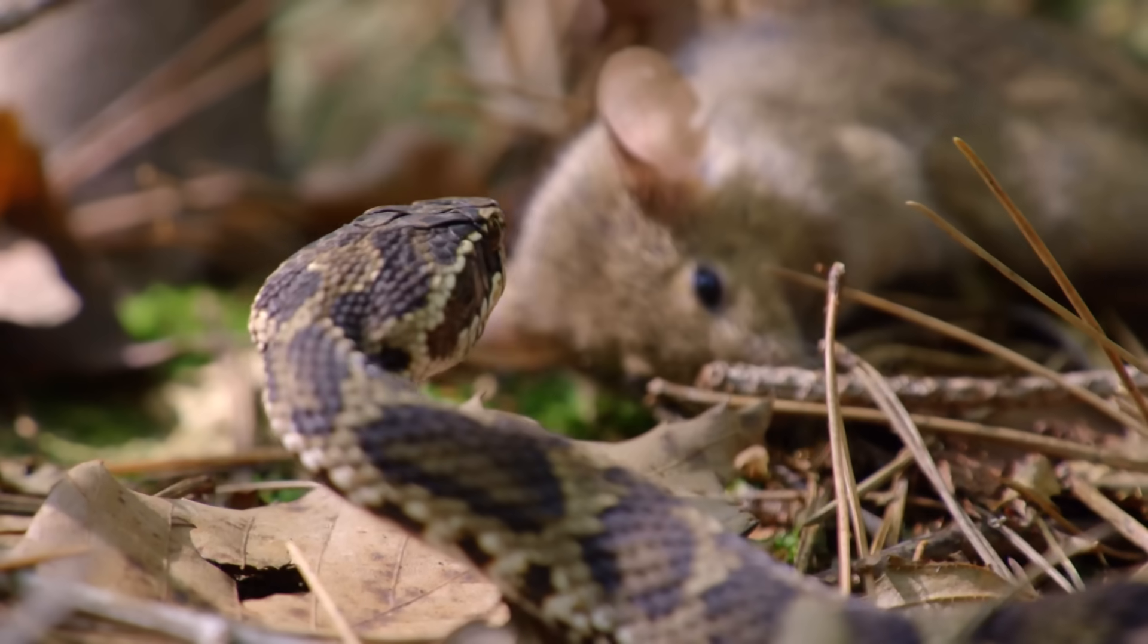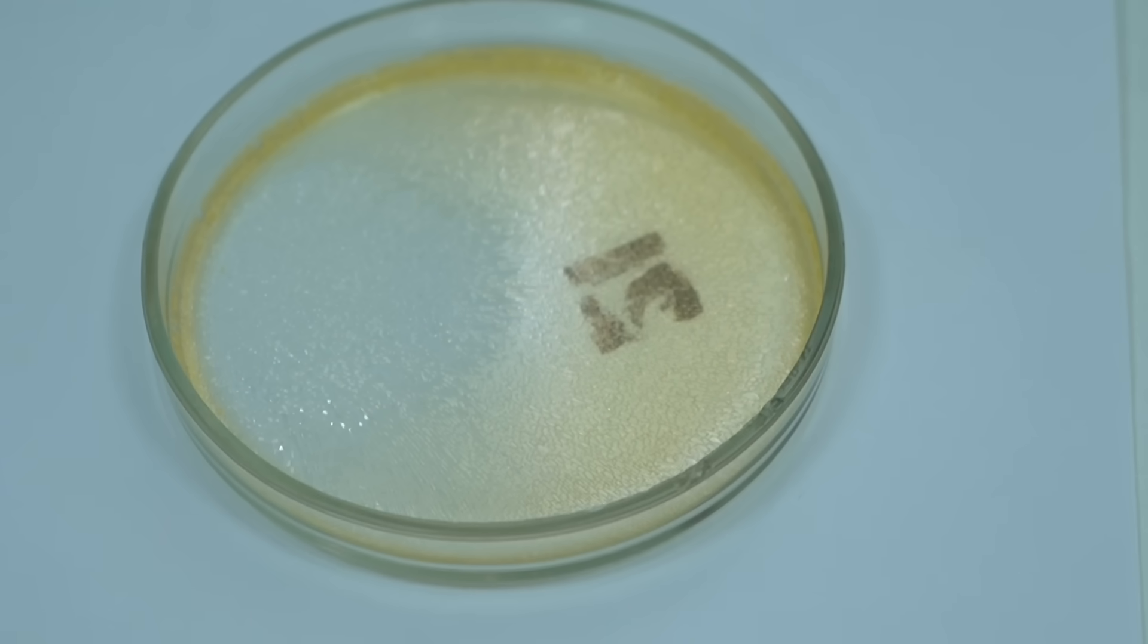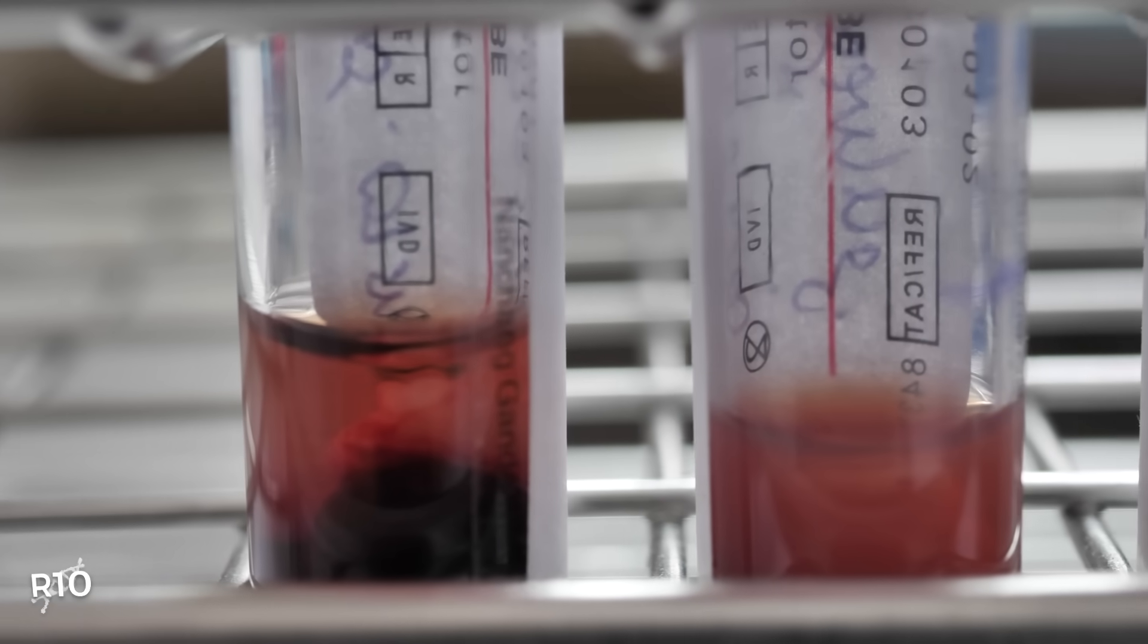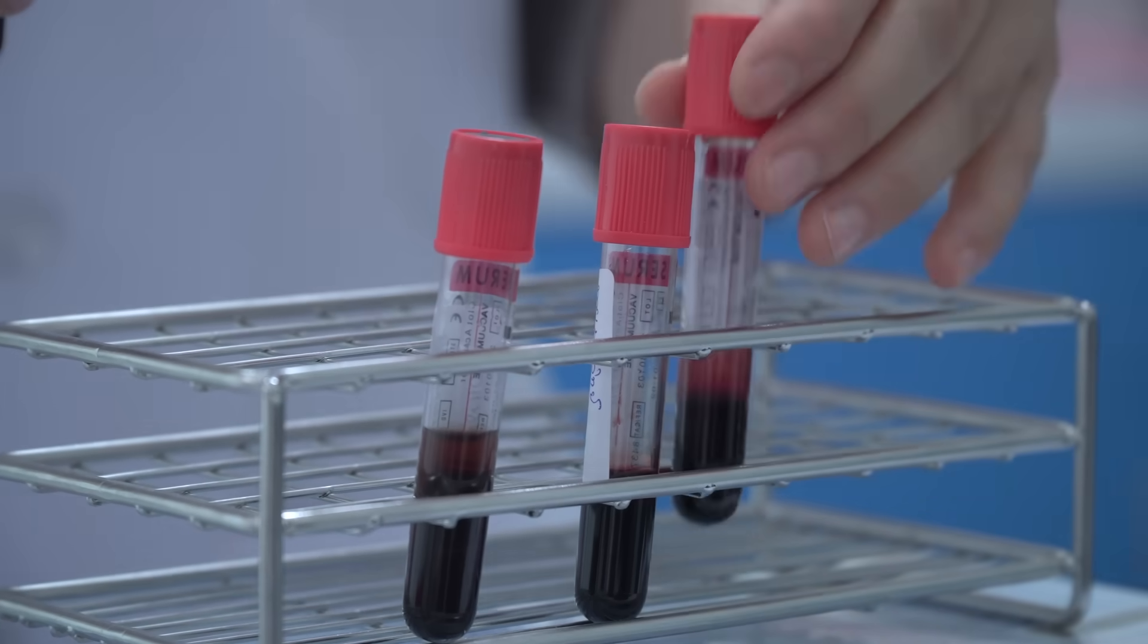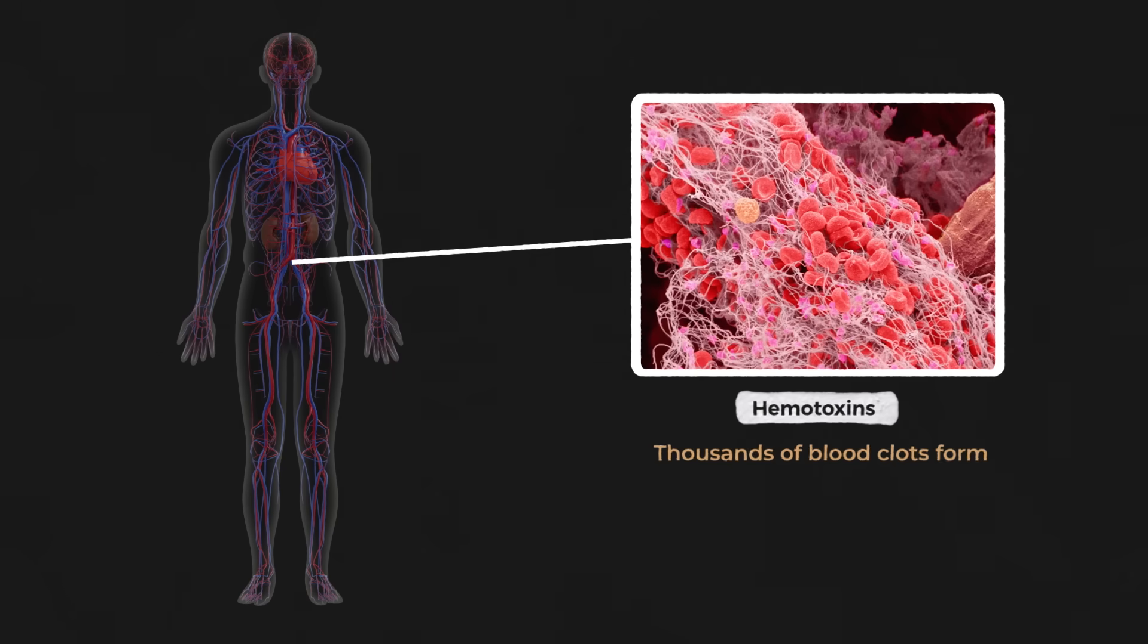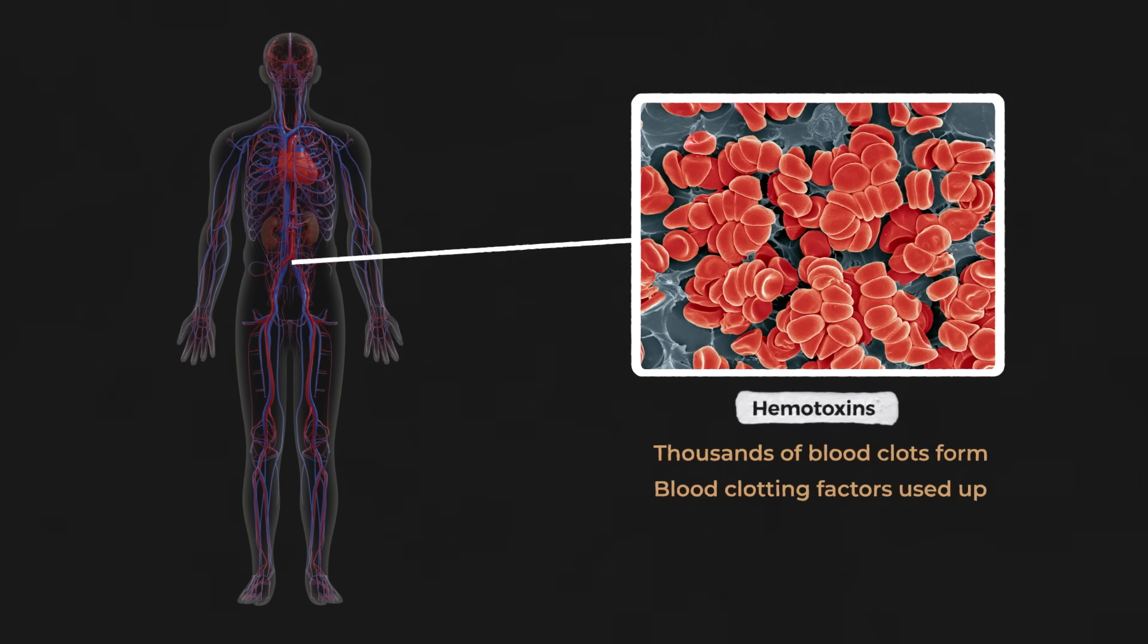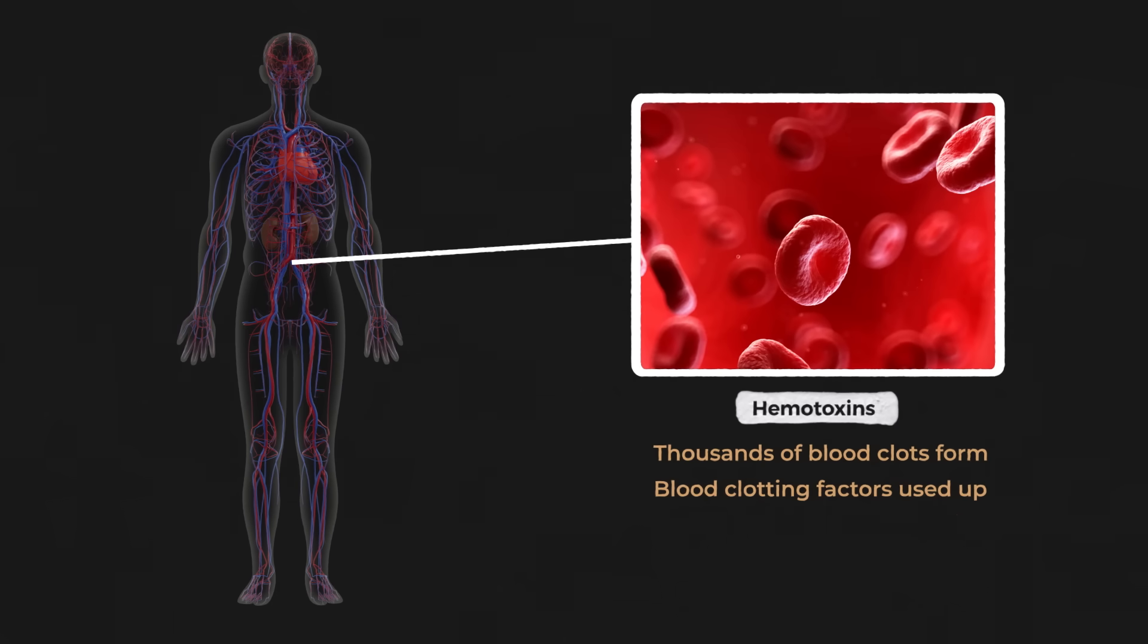Well, first, there are the hemotoxins. Inland taipan venom contains a number of proteins which encourage clotting of the blood. On small amounts of blood outside the body, this can cause it to turn into jelly, causing almost complete coagulation. But when acting on much larger volumes of blood inside the body, the opposite occurs. Thousands of small clots are formed very rapidly, using up almost all of the blood clotting factors. So instead of causing coagulation of the blood, it actually prevents blood from clotting at the site of the injury, leading to potentially lethal external bleeding.